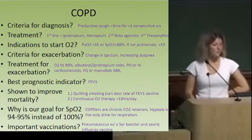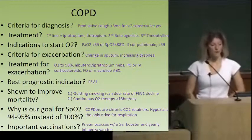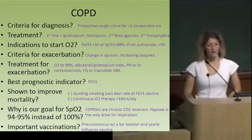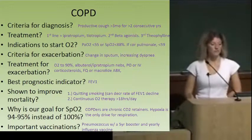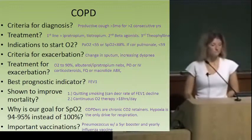When do we start O2? If their pulse ox is less than 88, or if blood gas is less than 55. If they have right heart failure — cor pulmonale — raise the threshold and start O2 sooner. Criteria for exacerbation: any change in sputum — amount, color, whatever. Their sputum is changing, it's probably an exacerbation. Treat with antibiotics and steroids — usually a macrolide and steroids — plus nebulizers and oxygen.